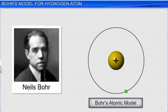In 1913, Niels Bohr proposed an atomic model that quantitatively explained the features of the structure of hydrogen atom and its spectrum.